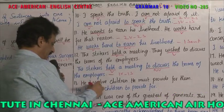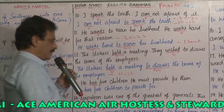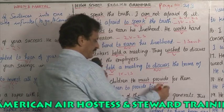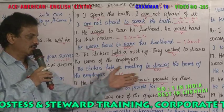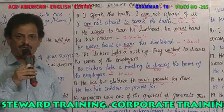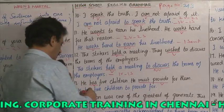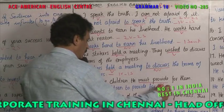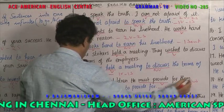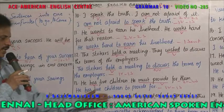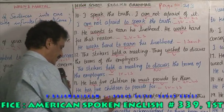Example 8: 'He has five children' — 'has' is the verb. 'He must provide for them' — 'must provide' is the verb. Two verbs, two sentences. Combined: 'He has five children to provide for.' 'Has' is the verb; 'to provide' becomes an infinitive. One verb, one sentence.